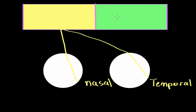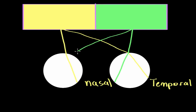Now let's look at a ray of light coming from the right side of the visual field. It would enter the right eye, be bent a little by the lens, and hit the nasal side of the right eye. Meanwhile, a ray of light from the right field hitting the left eye would be bent and hit the temporal side of the left eye.